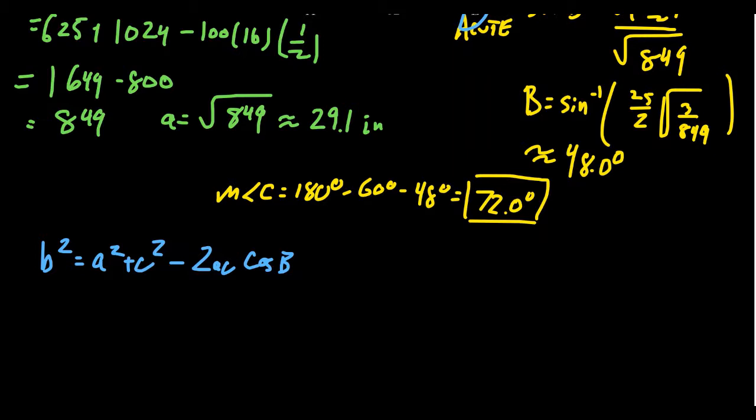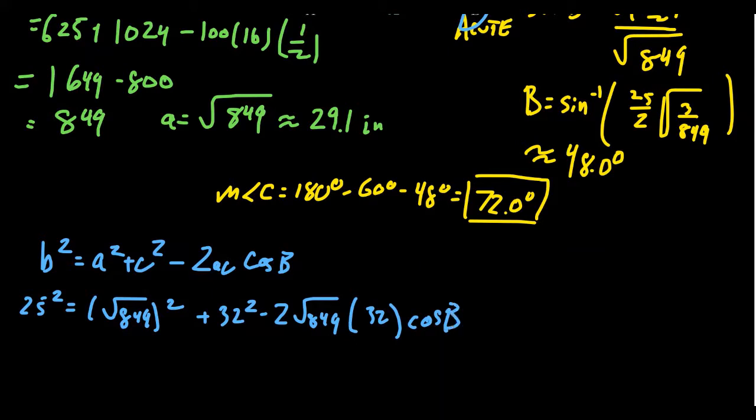Little B we know, it's 25. Little A we know, but I'm going to use the exact value here. We have the square root of 849. Notice when you square the square root, you'll just get back 849. And then we have 32 squared, like so. Then we're going to get minus 2 times the square root of 849 times C, which was 32, times cosine of B, like so. Squaring these things, we squared 25 before we got 625. When you square the square root of 849, you'll just get 849. 32 squared is 1024. We already know that, 1024. Then we subtract from that 2 times, 2 times 32 is 64. We'll just leave the square root there for a moment because what else can we do with it? And then we have cosine of B.